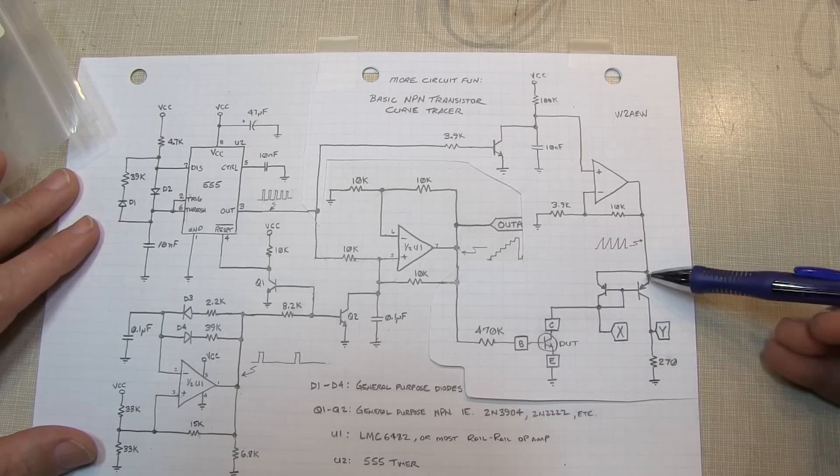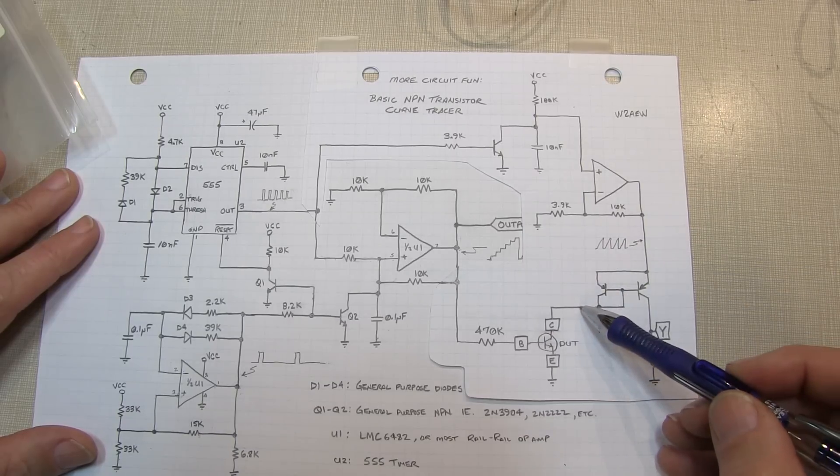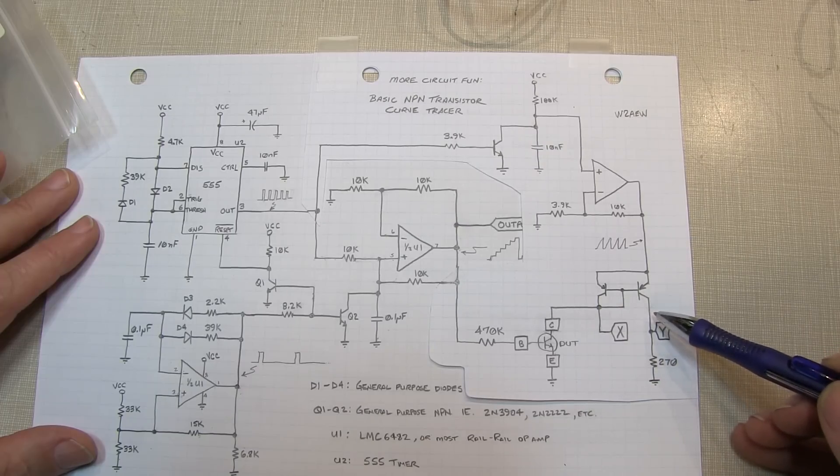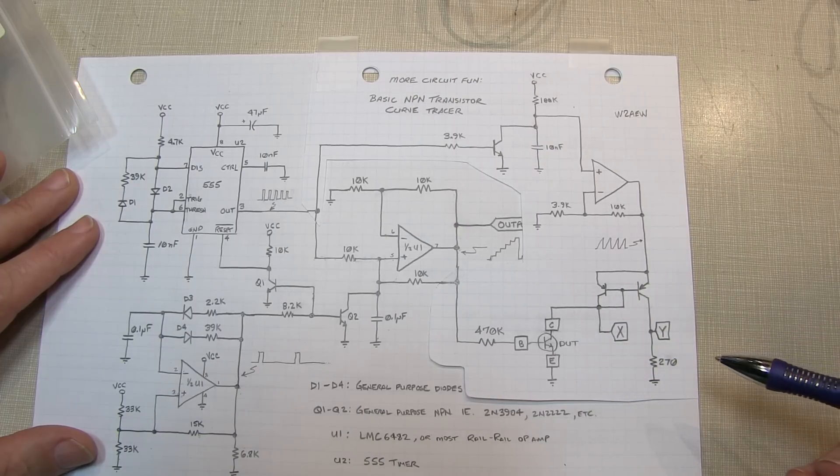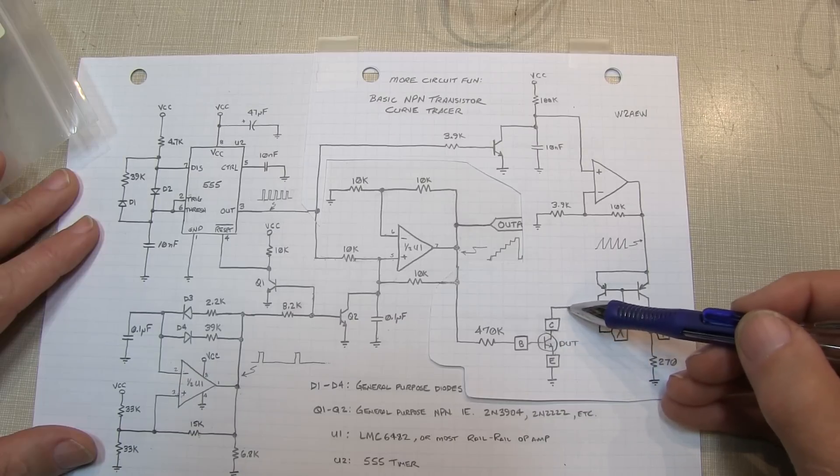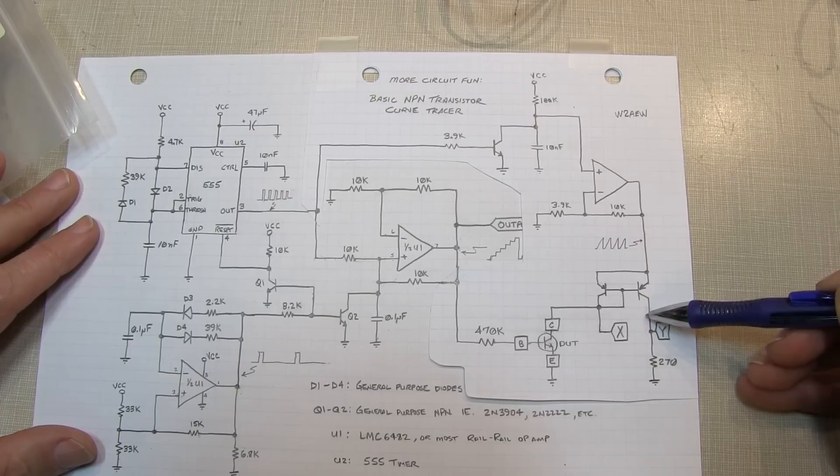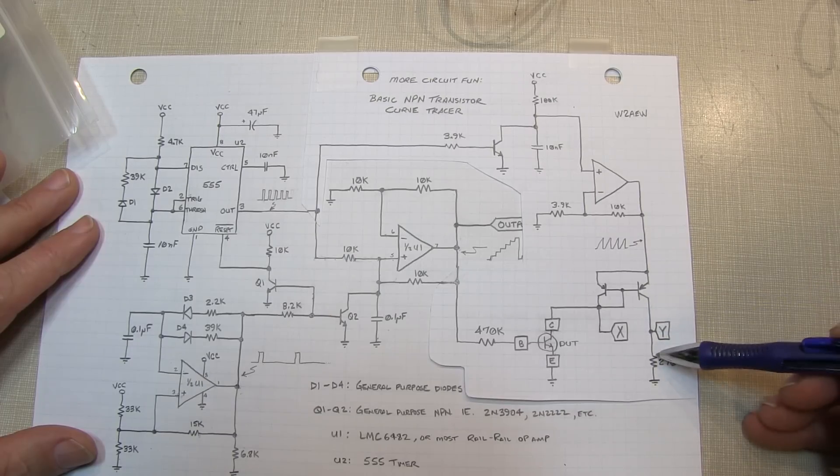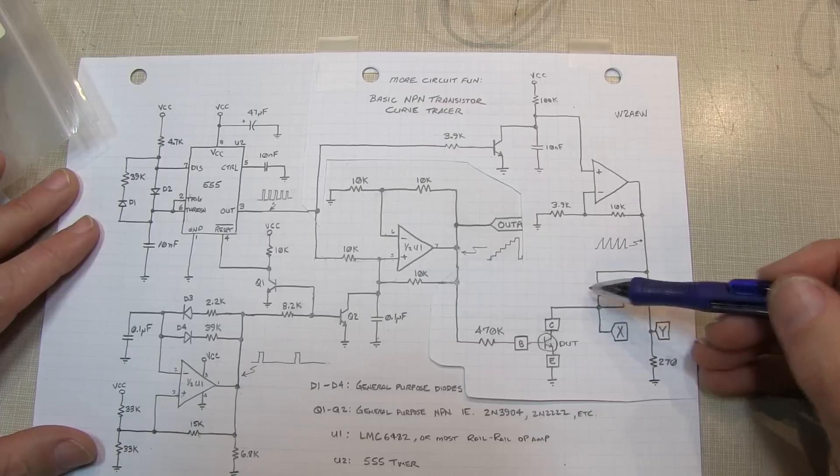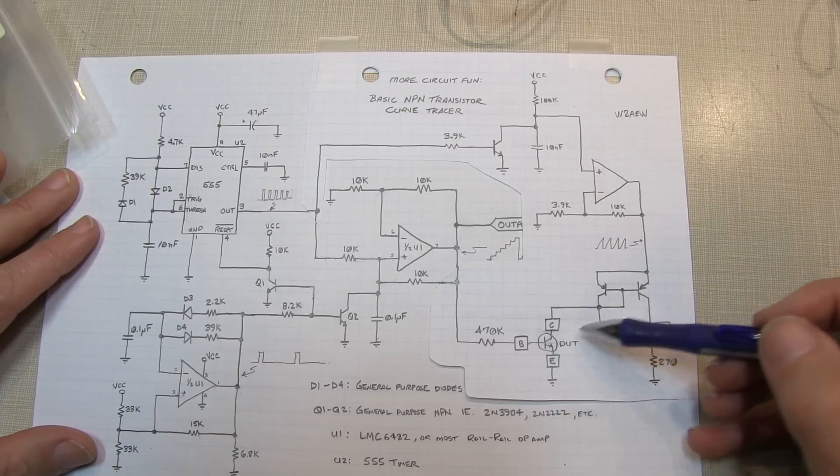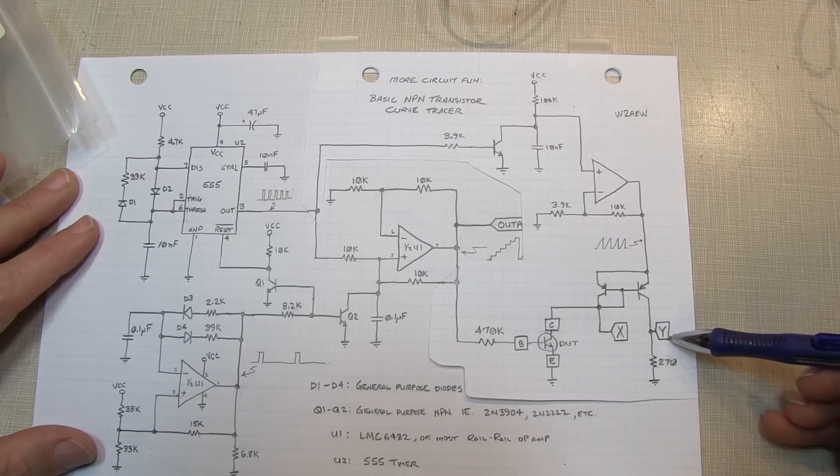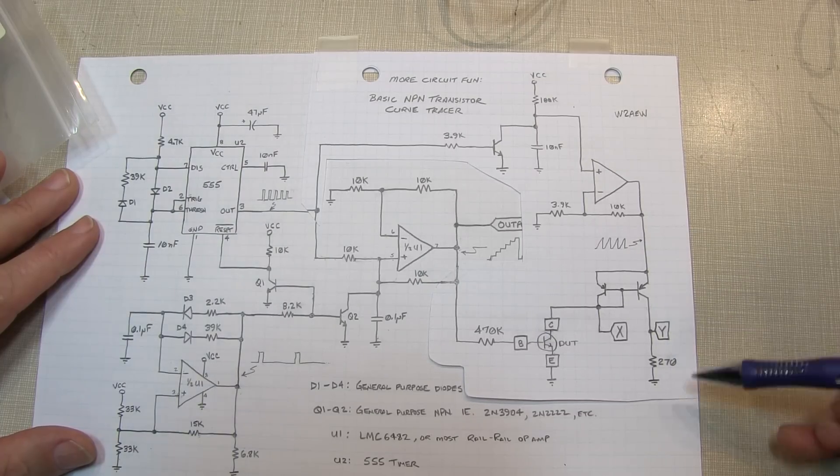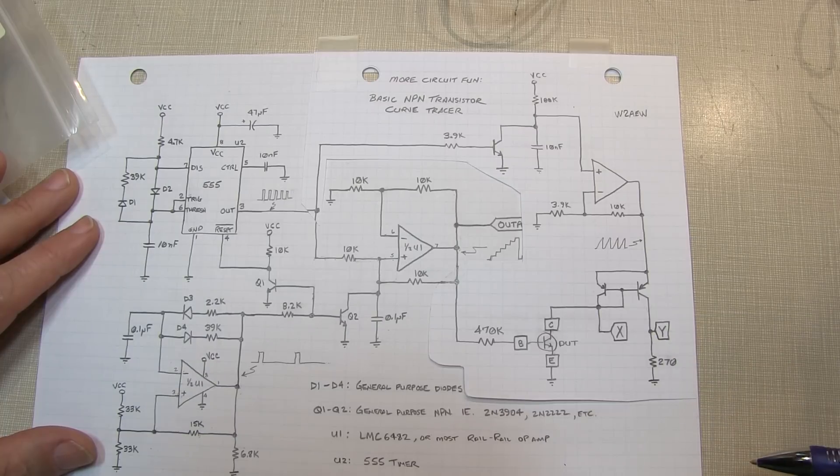This current mirror structure takes whatever collector current we've got flowing here and mirrors that current flowing down here, just by tying these transistors together in this way. As this collector current increases, this current being pushed down here increases. Therefore, the voltage on this resistor will increase as the collector current increases. We've just mirrored that current so we give ourselves a point we can measure with a voltage probe that gives us a positive response with respect to positive current.